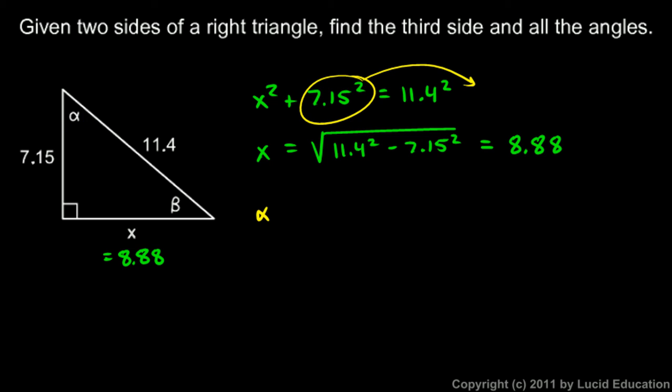When I look at angle alpha, this side is the side adjacent to alpha, and this side is the hypotenuse. And so when I have the adjacent and the hypotenuse, what trig function comes to mind there with adjacent and the hypotenuse? Well, the cosine comes to mind. I know that the cosine of alpha will have to be the adjacent 7.15 divided by the hypotenuse, 11.4.